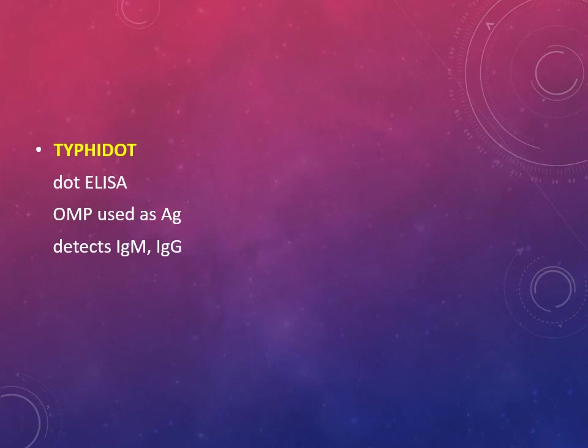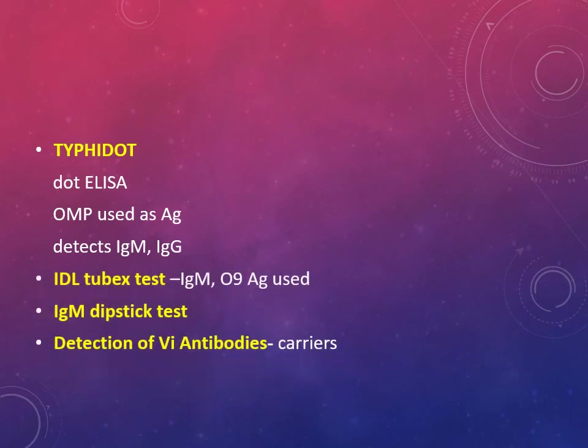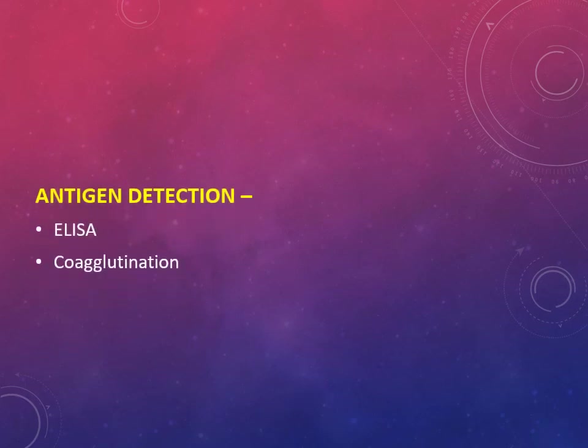Another good test is Typhidot - a dot enzyme immunoassay that can be done in the first week, which is its advantage, and gives better results than the Widal test. Other tests include the TUBEX test, IgM dipstick test, detection of Vi antibodies for carriers, antigen detection by ELISA, and the co-agglutination method.